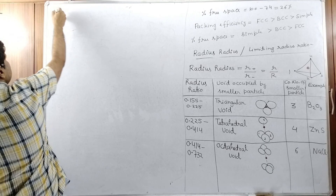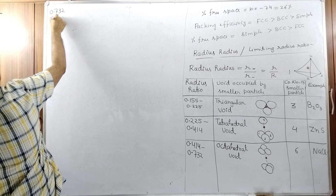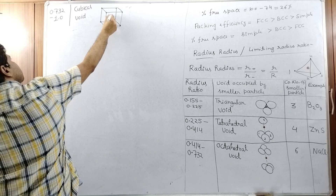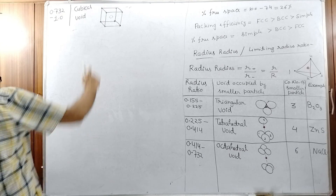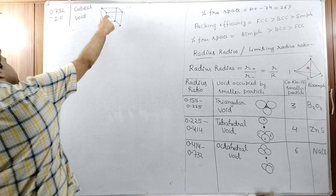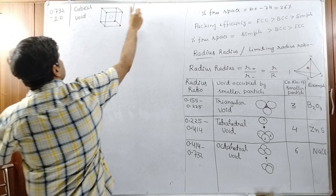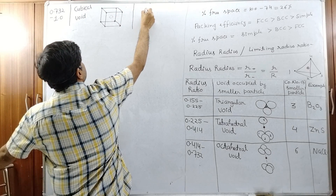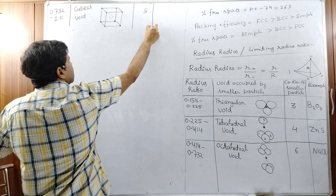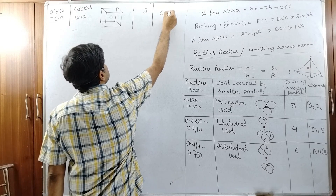Cubical void. When the radius ratio is 0.732 to 1, at the center of the cube there is one void. That center of the cube represents one cubical void, and the coordination number is eight. An example is cesium chloride (CsCl).